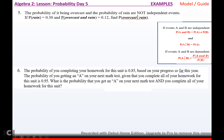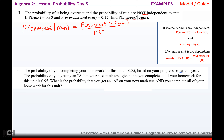Number five: the probability of it being overcast and the probability of rain are not independent. If P(rain) = 0.3 and P(overcast and rain) = 0.12, find P(overcast | rain). That's P(overcast and rain) divided by P(rain) = 0.12 / 0.3 = 0.4.